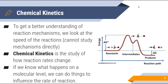Chemical kinetics itself is the study of how reaction rates change. If we know what happens on a molecular level — if we study the rates of change, we understand a bit about what mechanisms occur — then we can do a variety of things that influence the rate of the reaction to either produce more product or speed up the reaction, which would be very important in, say, a pharmaceutical field.